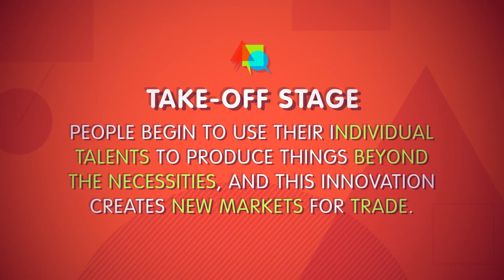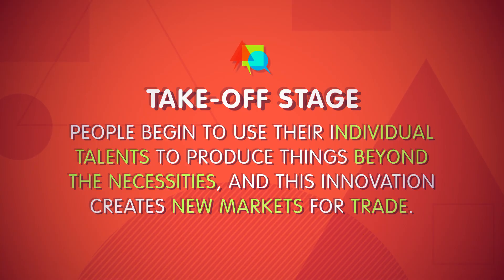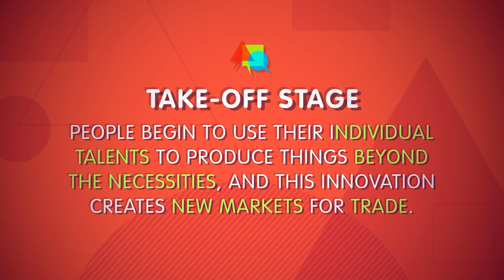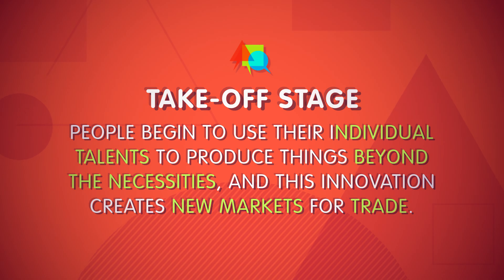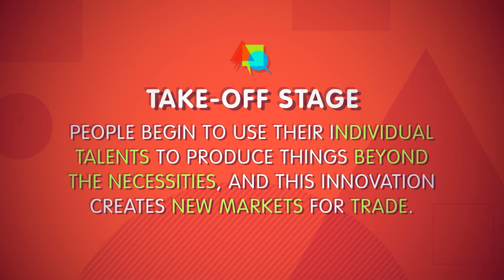But as people begin to move beyond doing what's always been done, a society moves into Rostow's second stage — the takeoff stage. Here, people begin to use their individual talents to produce things beyond the necessities, and this innovation creates new markets for trade. In turn, greater individualism takes hold, and social status is more closely linked with material wealth.